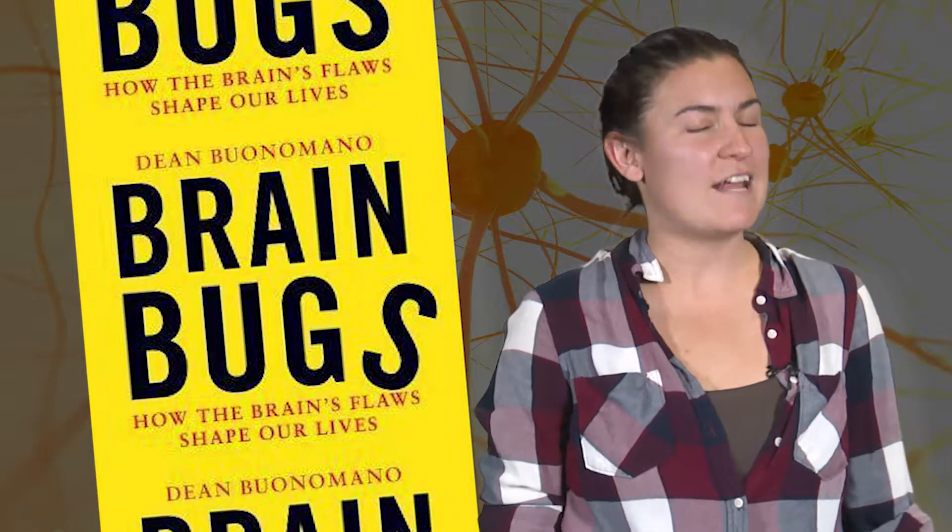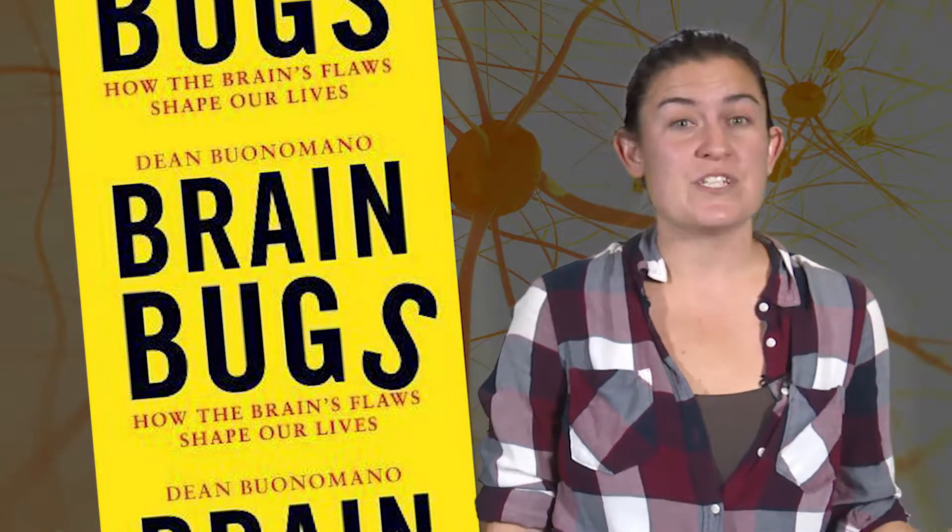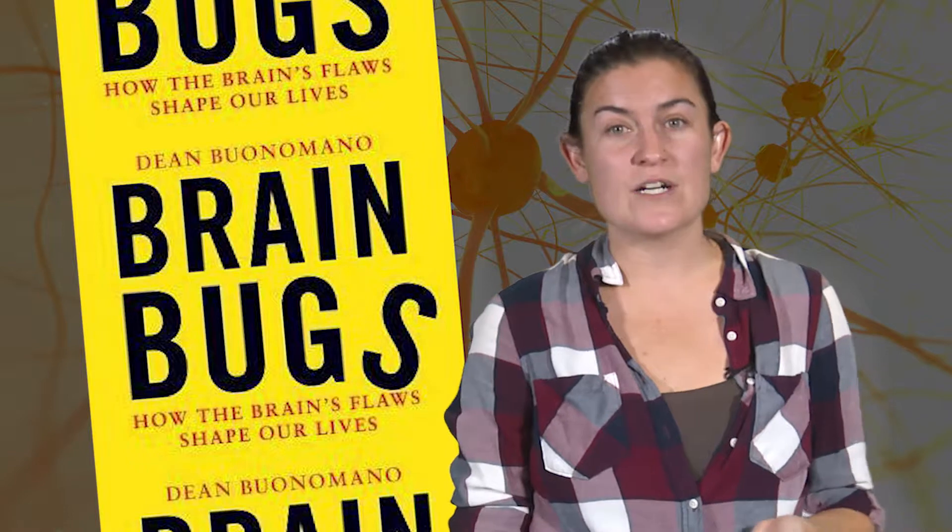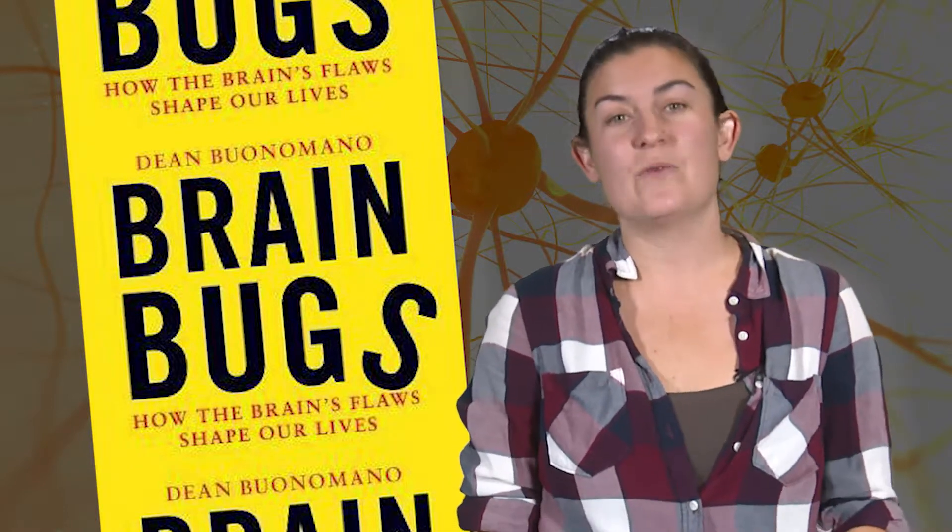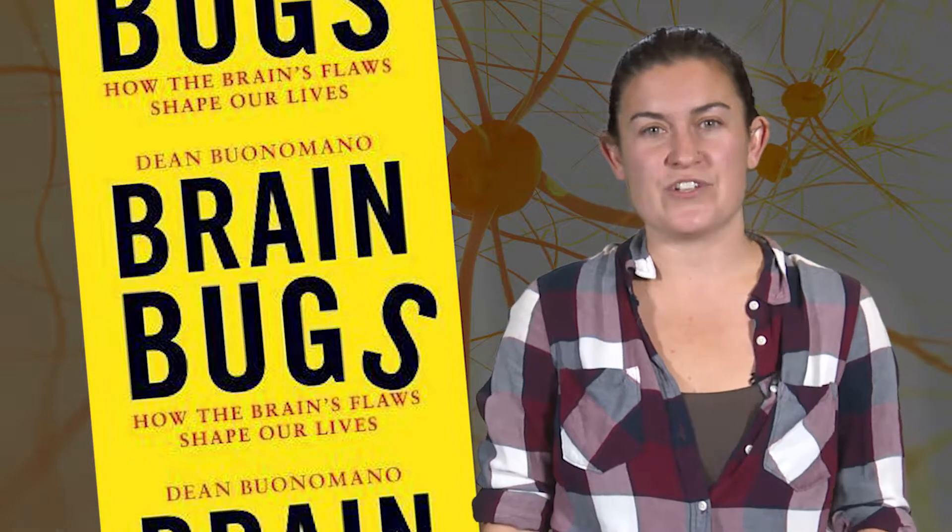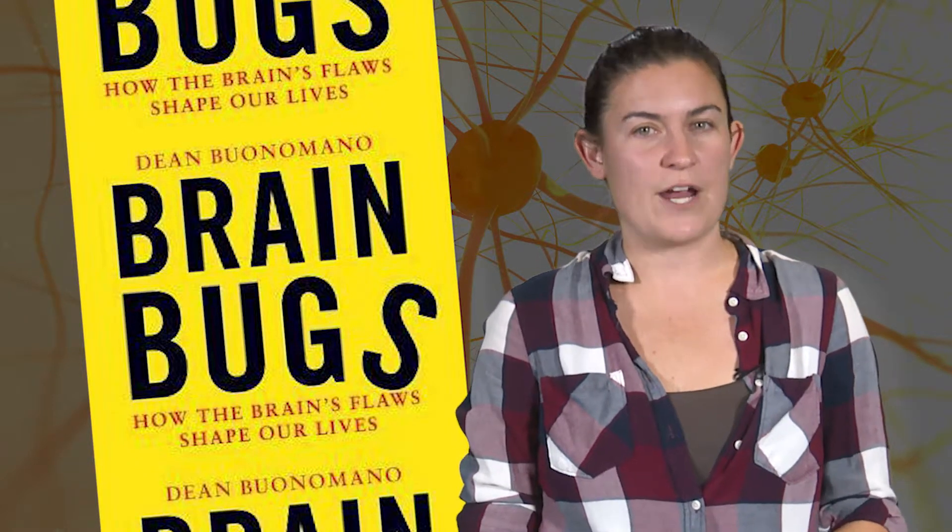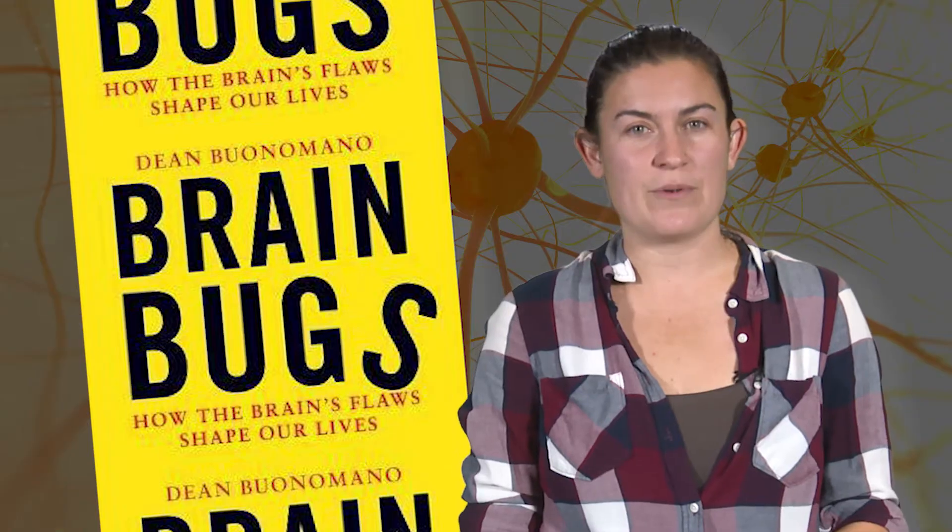But priming is not the only brain bug. So if you've ever wondered why people are superstitious or thought about how advertising works or why people gamble even though they know the house will win, well Dean Buonomano has some answers for you in his easy to read extremely interesting book, Brain Bugs: How the Brain's Flaws Shape Our Lives.